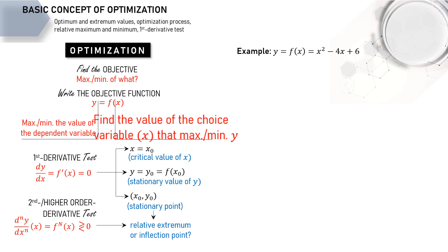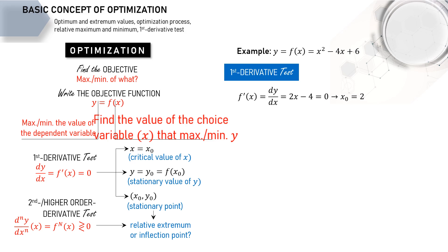We know how the function's curve looks — it must have a relative minimum point, but let's try the procedure to find it out. Finding the first derivative and equalizing dy/dx to zero gives us the critical value with x equal to 2. Then we get the stationary value y equals 2, and now we have the stationary point (2, 2), which we try to determine as a relative maximum, relative minimum, or inflection point.